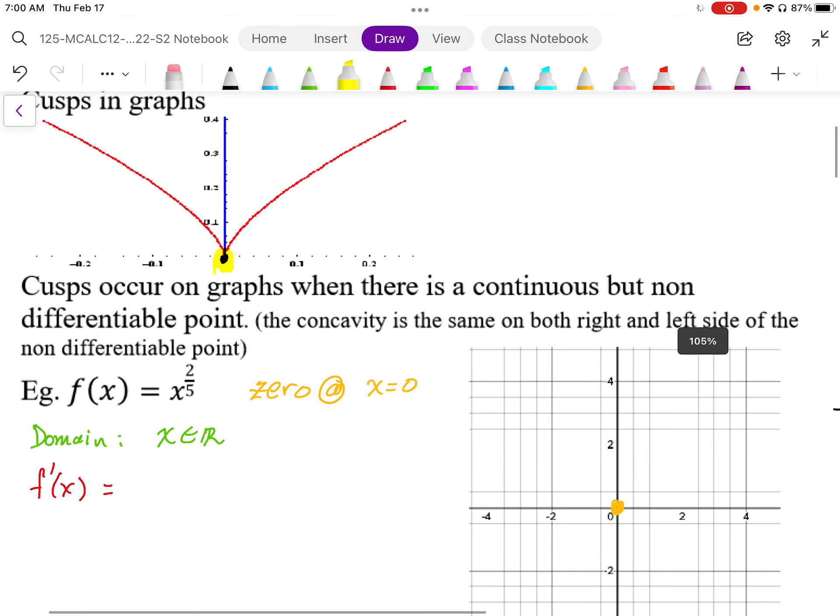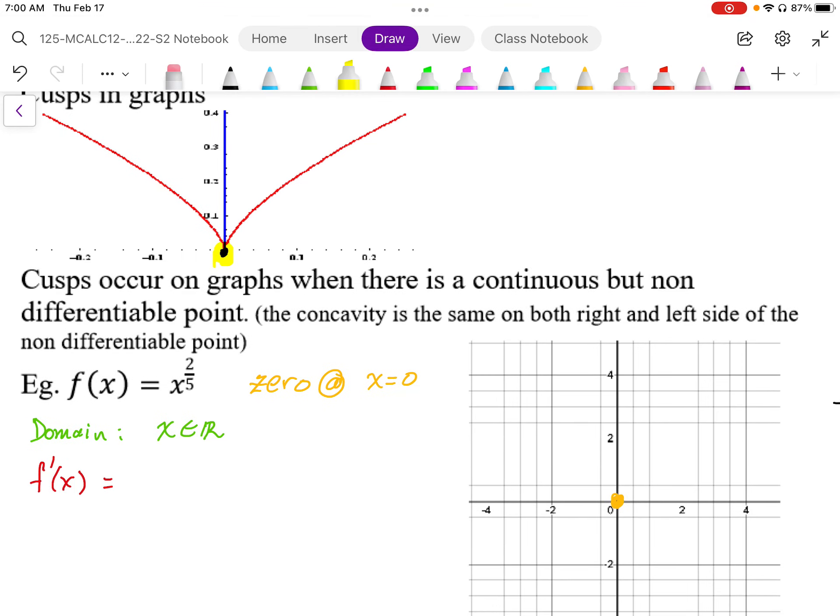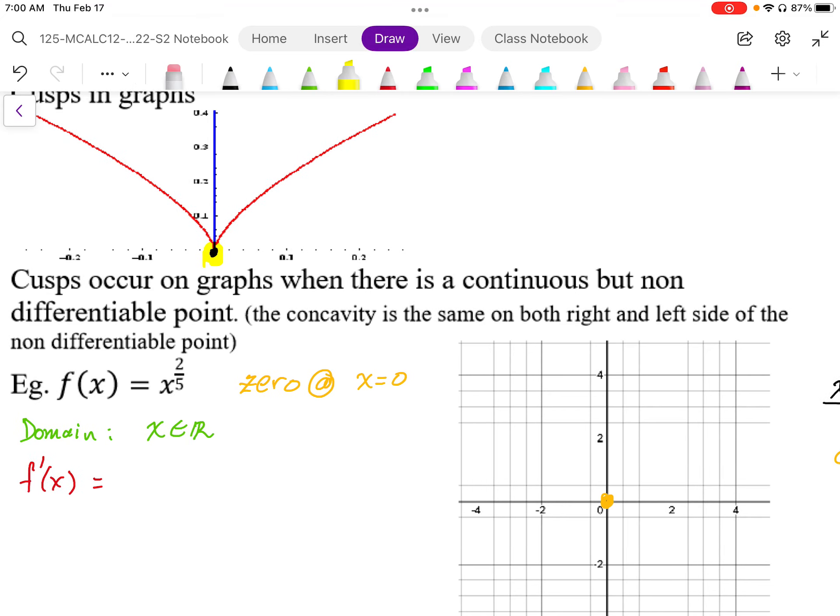Looking at that function, we can see that there's a zero at x equals 0, so I've plotted the zero on the graph already. Because of that power 2 here, the domain is all real numbers, and the fact that it's an odd root also indicates that the domain would be all real numbers.